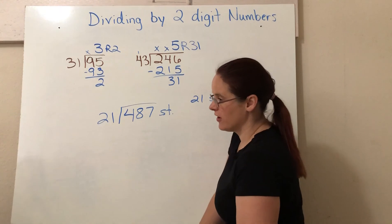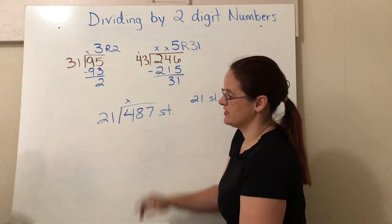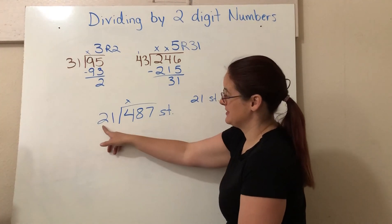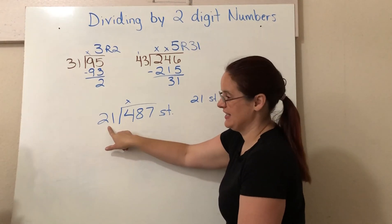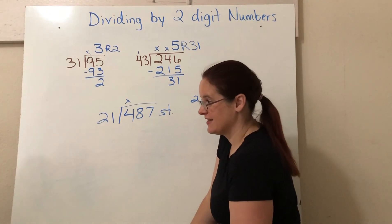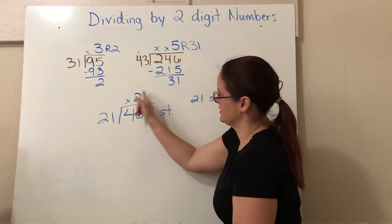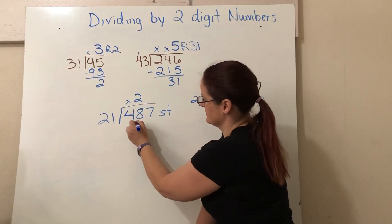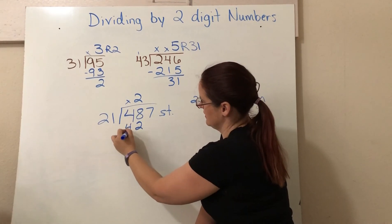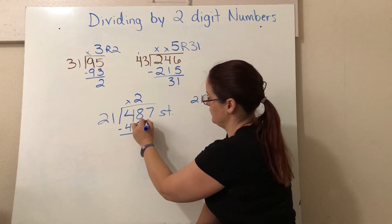Does 21 go into 4? Nope. Definitely not. Does 21 go into 48? Yes. We can round to figure out how many times. Instead of 21, let's look at that as 20. And how many times would 20 go into 40? Two. Two times. So we'll try a two first. What's two times one? Two times one is two. And two times two? Four. Can we subtract? Yes, we can.